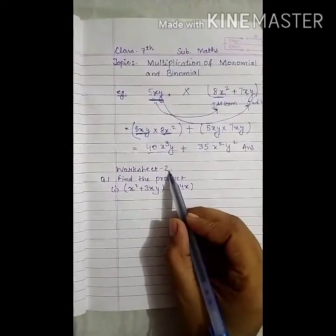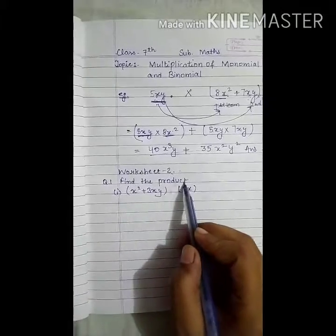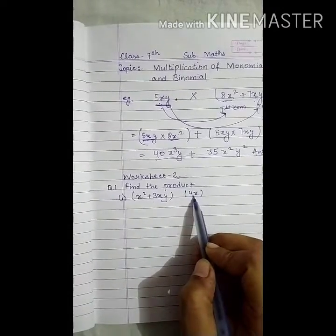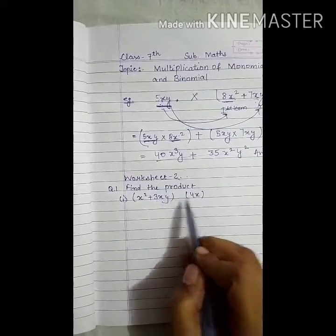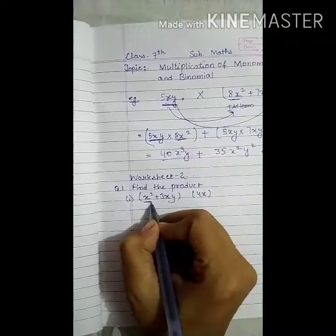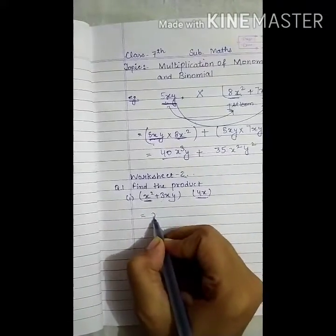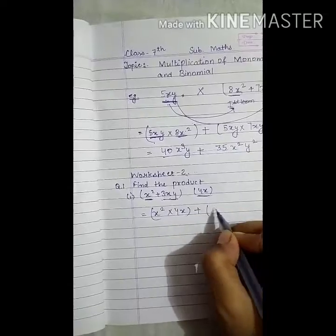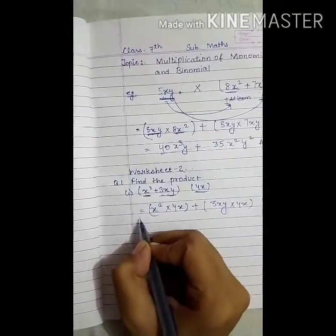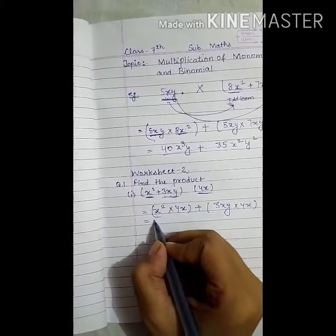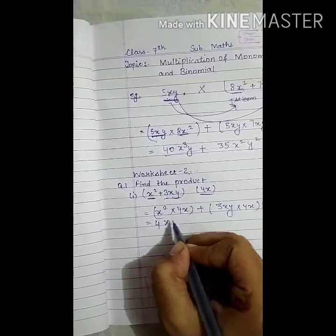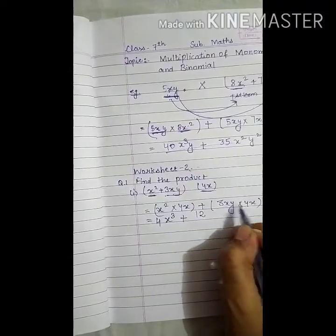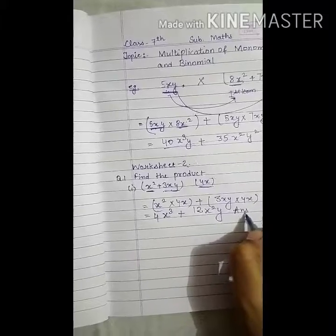Now let us solve some questions from worksheet 2. Question number 1: find the product. Part one — x squared plus 3xy is the binomial and 4x is the monomial, and we have to multiply these two. First we multiply the first term by the monomial: x squared multiplied by 4x. Then plus the second term multiplied by 4x. 4 ones are 4, and x squared times x is x cubed. Plus 3 fours are 12, giving 12x squared y. This is the required answer.